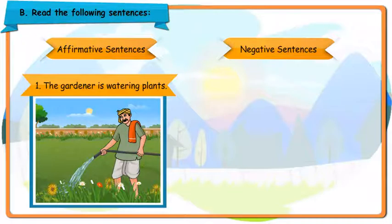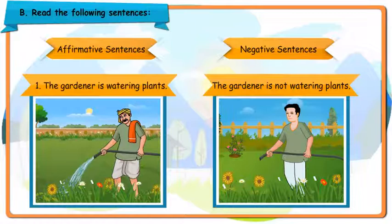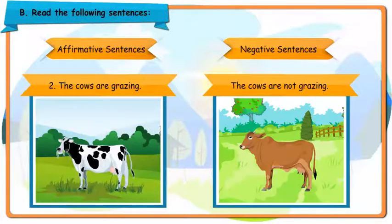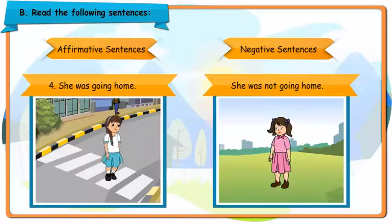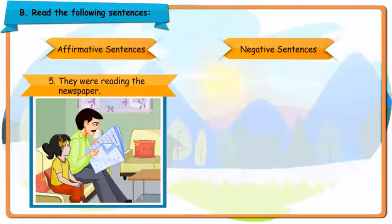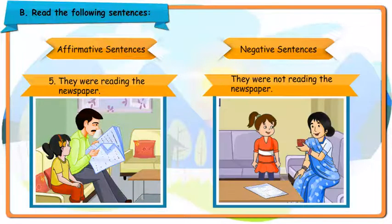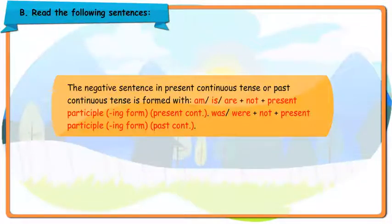Read the following sentences. Affirmative Sentences, Negative Sentences. The gardener is watering plants. The gardener is not watering plants. The cows are grazing. The cows are not grazing. The baby is crying. The baby is not crying. She was going home. She was not going home. They were reading the newspaper. They were not reading the newspaper.